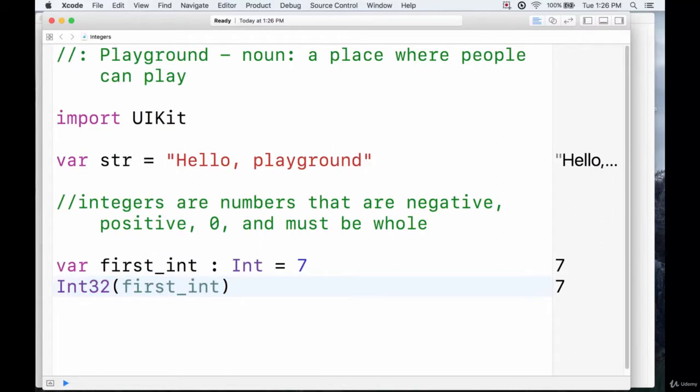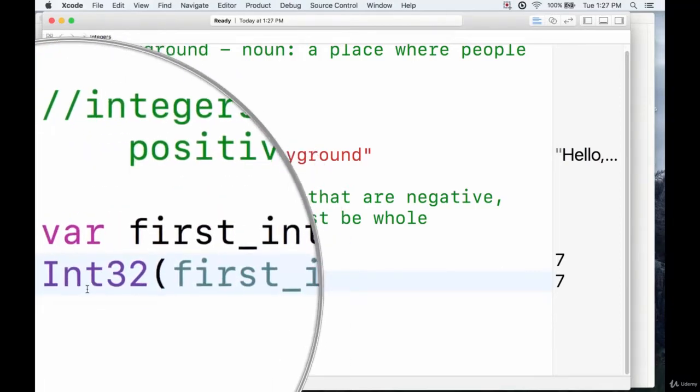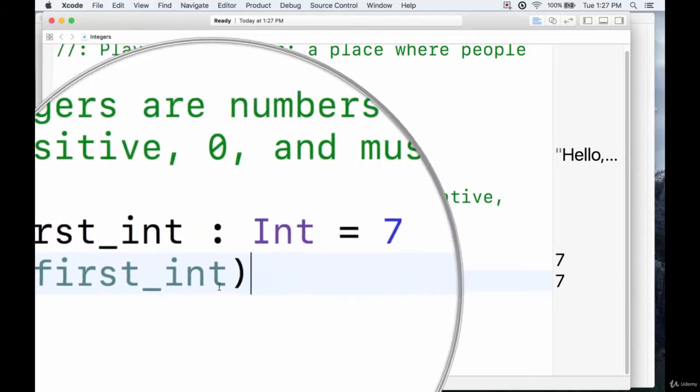And we can convert a lot of things back and forth between integers. We can even convert strings to integers, as long as there are numerical values in the string. But that's going to be something for a few videos from now. Just bear in mind that as far as numbers go, the conversion between different types of integers is easy, and this is all you have to do. You declare the new type, and you put the variable in the brackets.